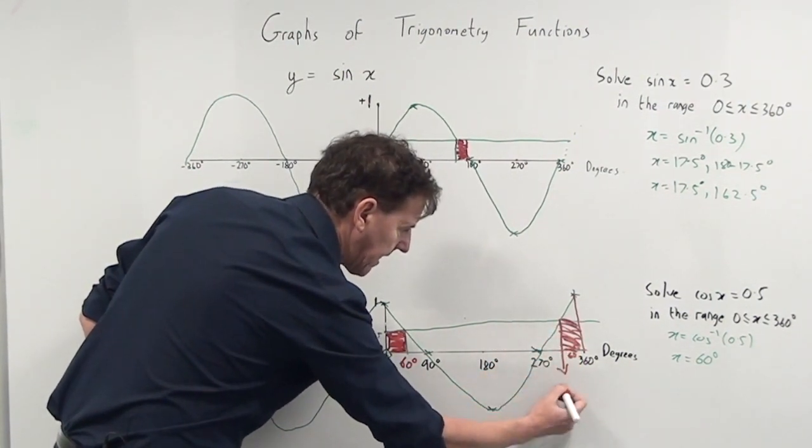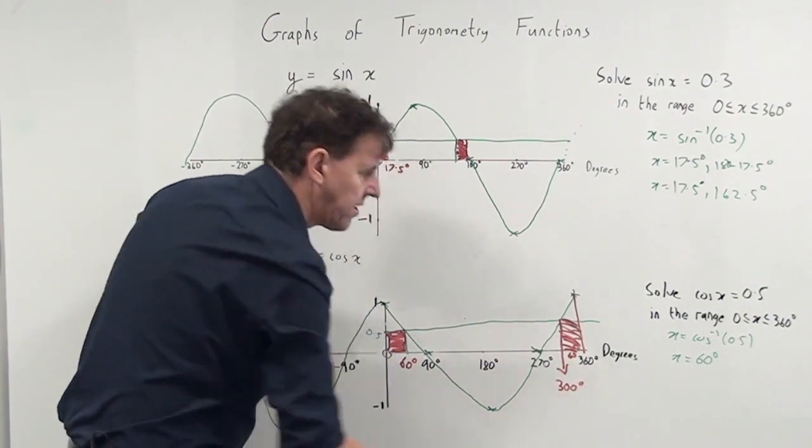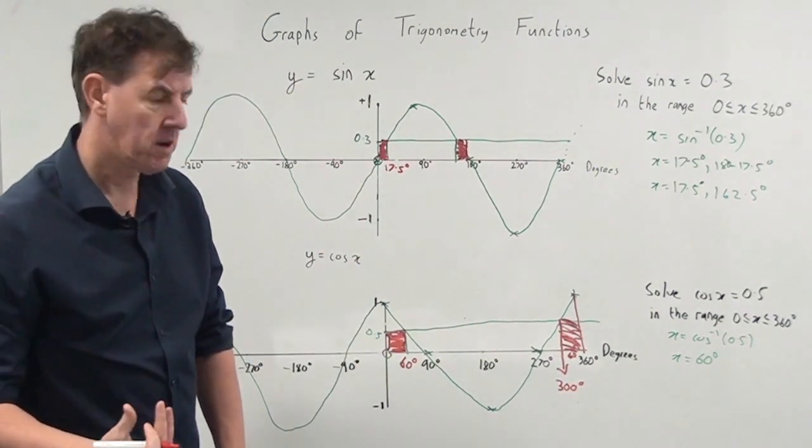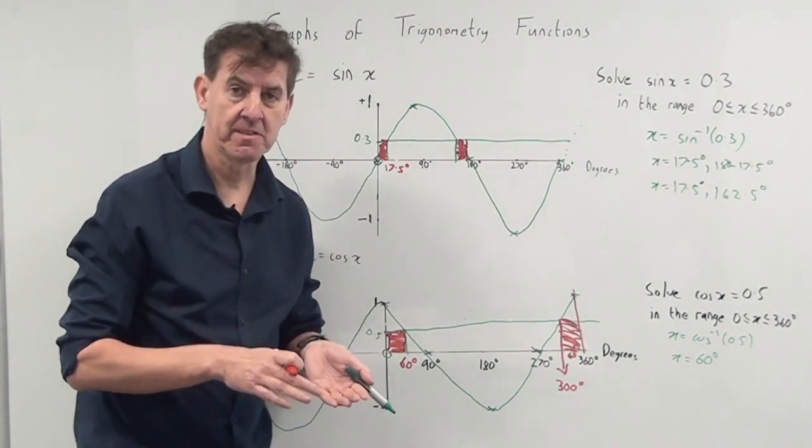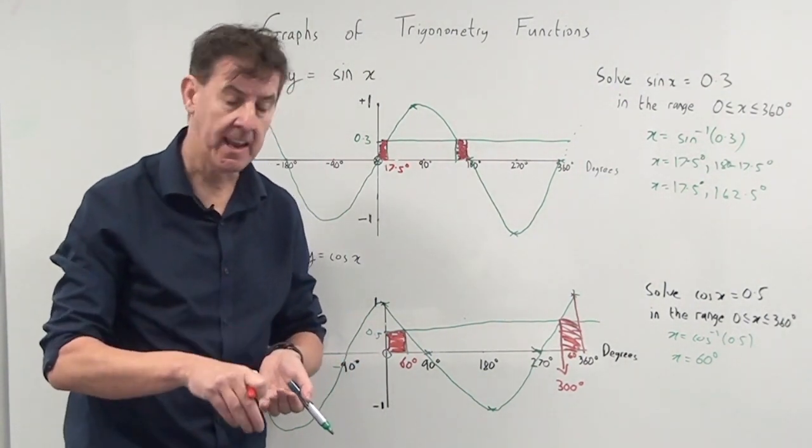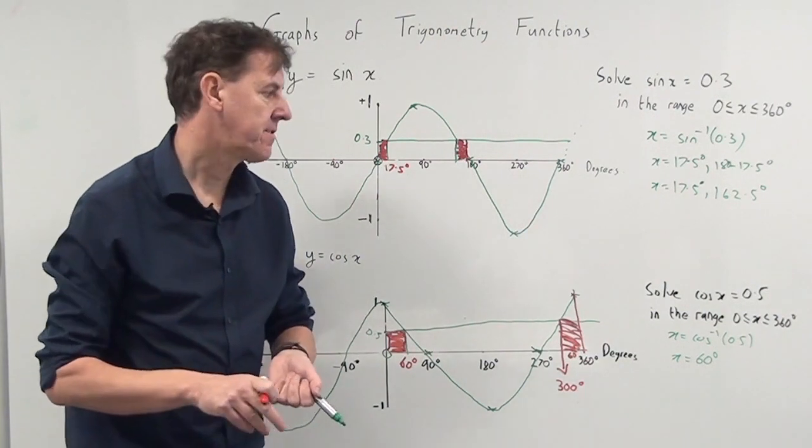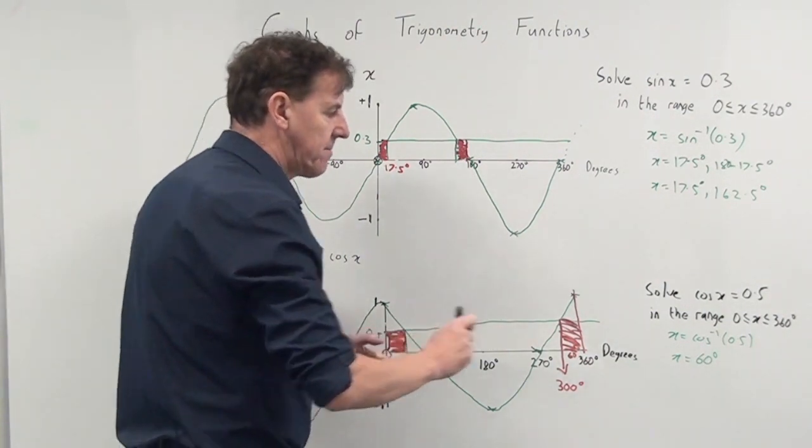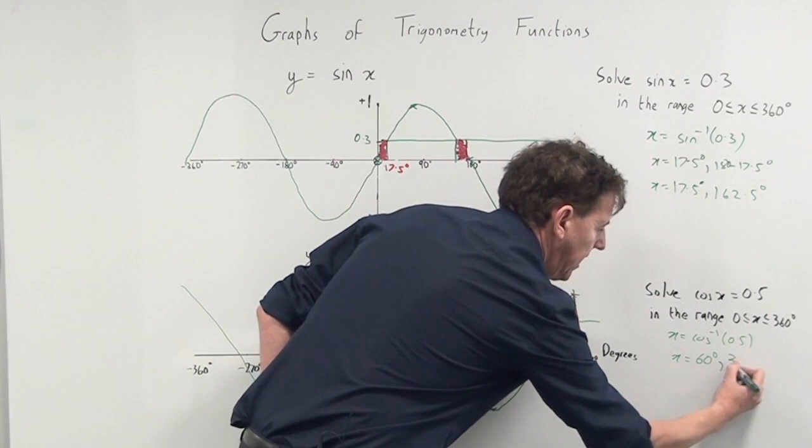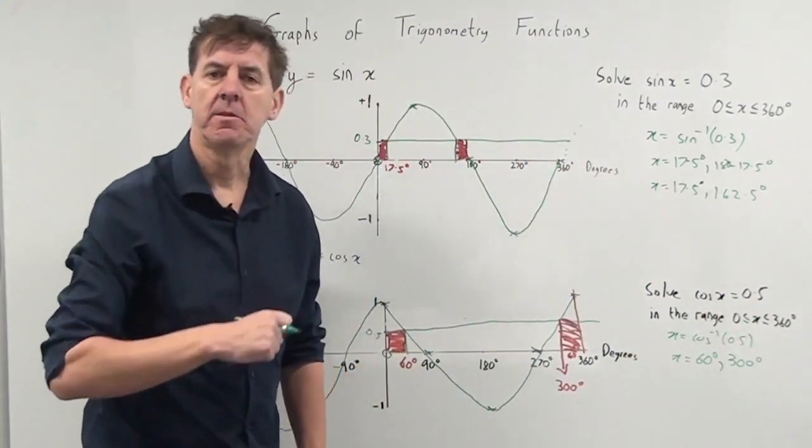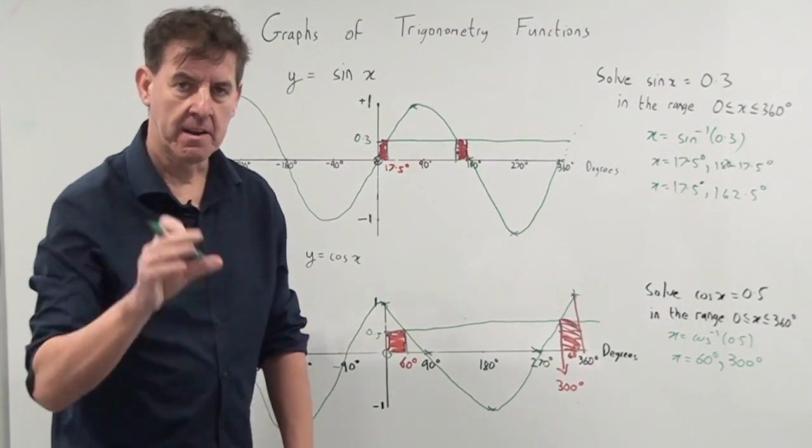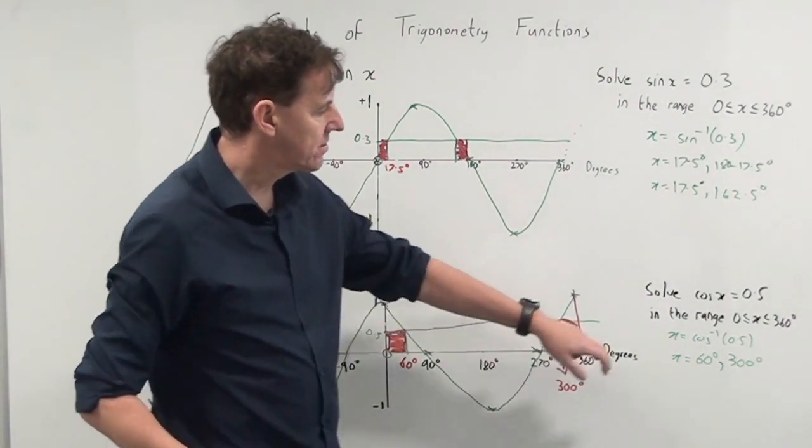So I'd go to my calculator now - I haven't had to round these to one decimal place, these are exact - exactly 60 and exactly 300 degrees. So I would expect to type into my calculator the cos of 60 and the cos of 300, and I'm expecting my answer to be 0.5. Now remember, that was in the range 0 to 360.